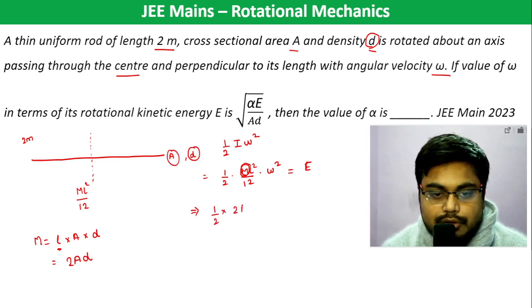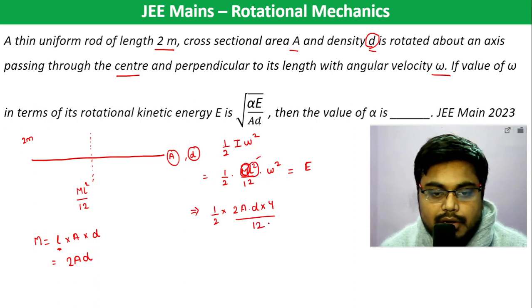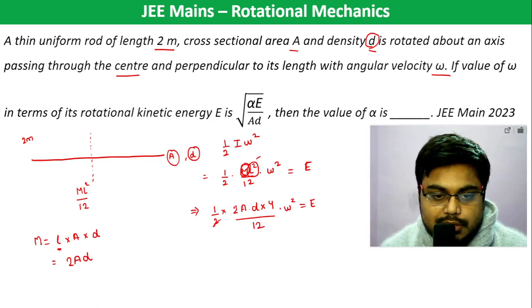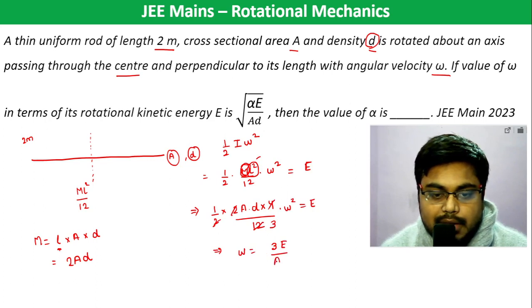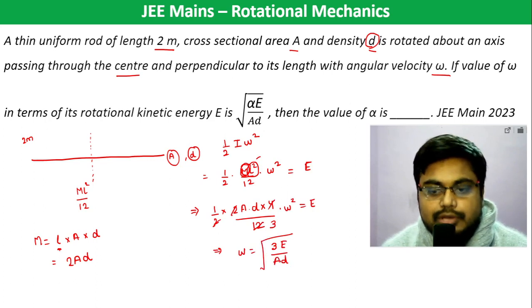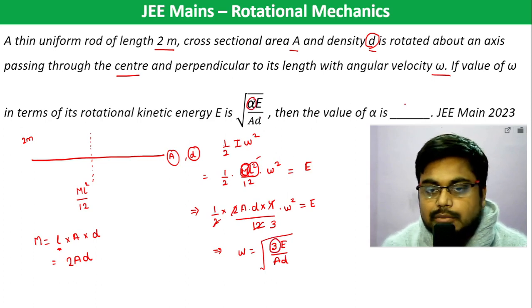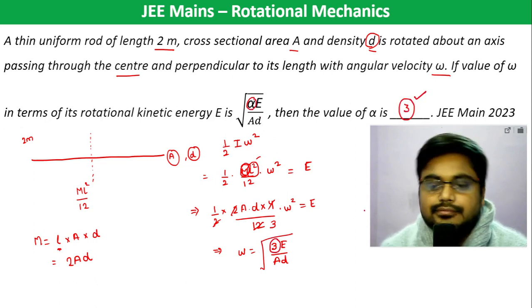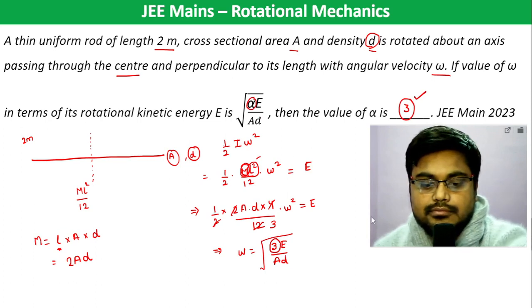Substituting: half into 2AD, and length is 2 meter so L squared is 4, divided by 12, into omega squared equals E. Simplifying, 4 divided by 12 gives 1/3, so omega equals sqrt(3E / AD). Comparing with the given equation, alpha equals 3.